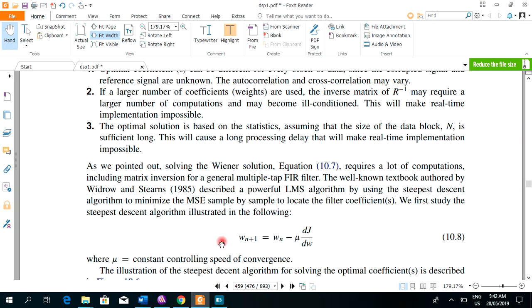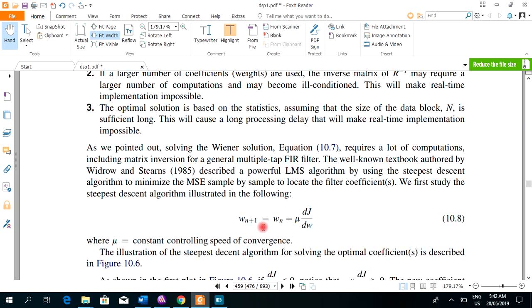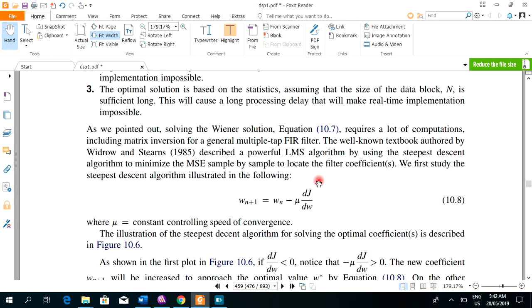We are going to study the steepest descent algorithm illustrated in the following. W of N is the weight update is equal to the previous weight minus mu into first derivative of MSE which is mean squared error with respect to W. Mu is constant controlling speed of convergence.